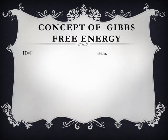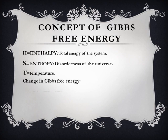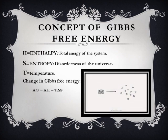In the Gibbs free energy equation, H denotes enthalpy — the total energy of the system — S denotes entropy, the disorderness of the universe, and T denotes temperature. The equation is written as ΔG = ΔH − TΔS, which means the temperature multiplied by entropy subtracted from enthalpy equals the change in Gibbs free energy. A picture on the slide explains the process of entropy — the disorderness of the universe.